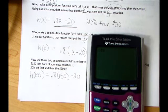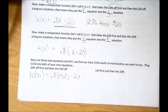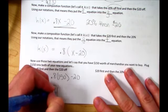Grab your calculators. 0.8 times 150 minus 20. Your total bill will be $100.